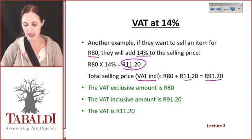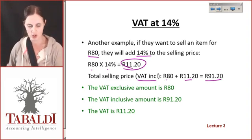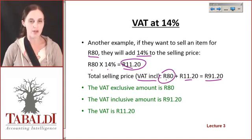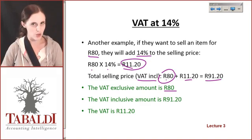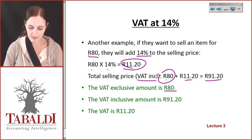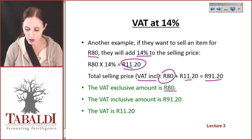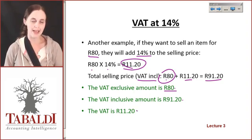And when someone gives me 91 Rand 20, I'm going to take 11 Rand 20 of that and give it straight to the government, and only 80 Rand of that actually comes to me. The VAT exclusive amount — and get used to the terminology — the VAT exclusive amount will be 80 Rand. The VAT inclusive amount will be 91 Rand 20 and the VAT itself will be 11 Rand 20.